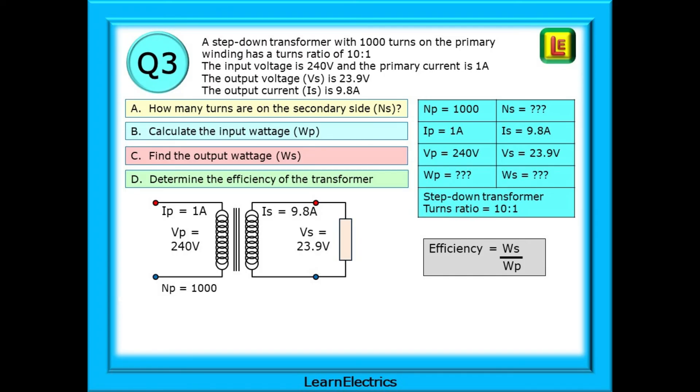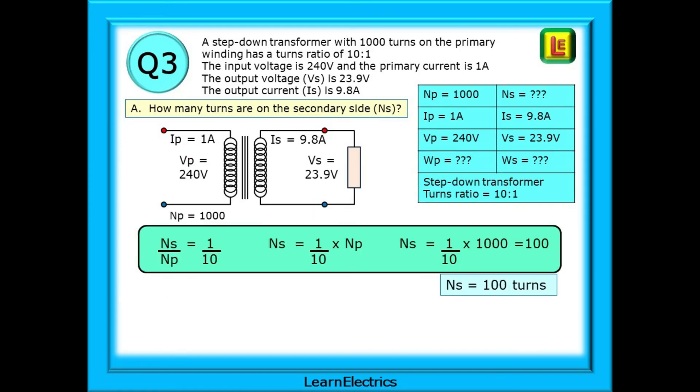Part A. We need to find NS, the number of turns on the secondary winding. We know NP, the primary winding, and we know the turns ratio is 10 to 1. NP is 10 times bigger than the secondary. Or, the secondary NS is 10 times smaller than NP. If NP is 1000, then NS has just 100 turns. And that's our answer.